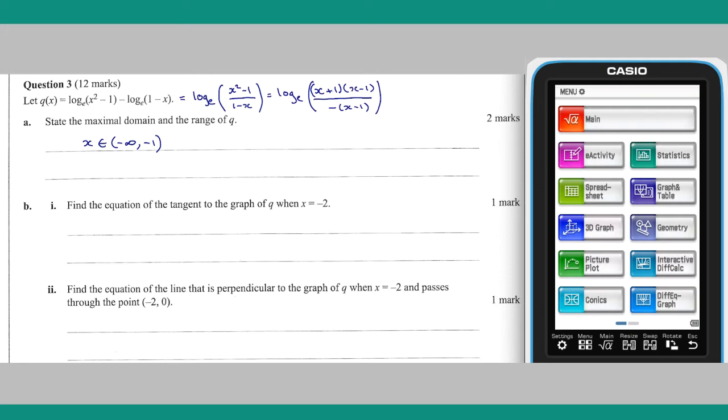For this domain, Q of X can be simplified further. This function is a transformation of Y equals log base E of X, reflected in the X axis, and translated left, 1 unit. As such, Q will have the same range as log base E of X, which is the reals.